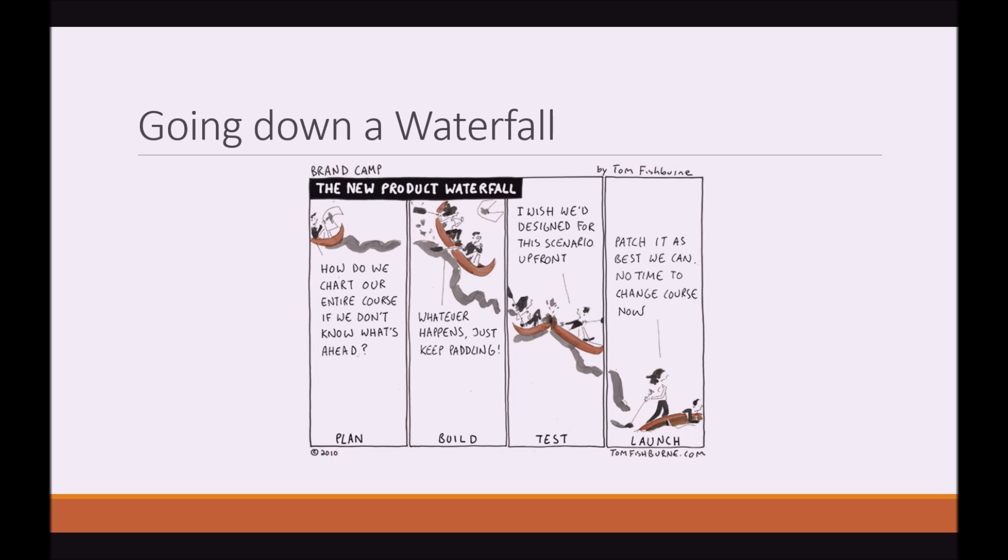So this little cartoon strip here pretty much sums up waterfall perfectly. You can't really predict what the client's going to do or what's going to happen in the project in the coming months. You can work on something, it may not work for what the client actually wants. So many things can go wrong. And by the time it comes to showing the client, it's usually a few days before launch. There's not much else you can do at this stage. It's just going to be either pushed back or the client's going to say, launch it now and just leave it as a botched job.